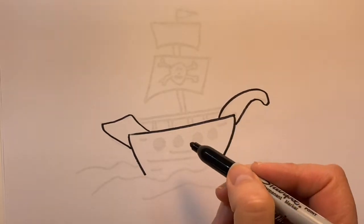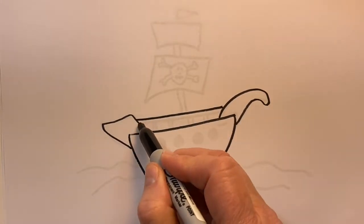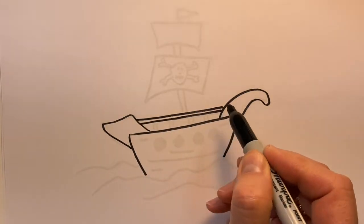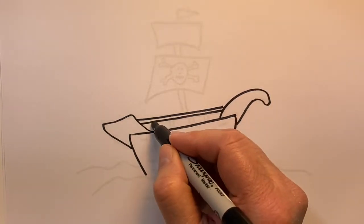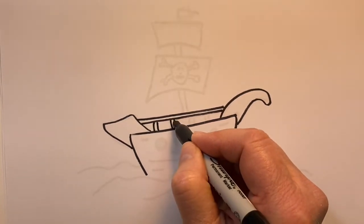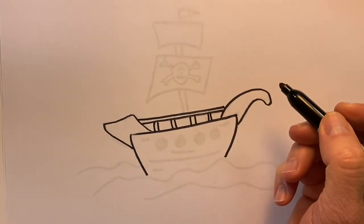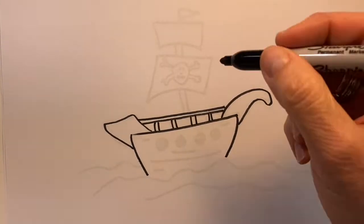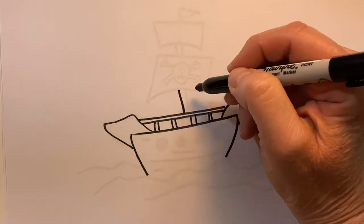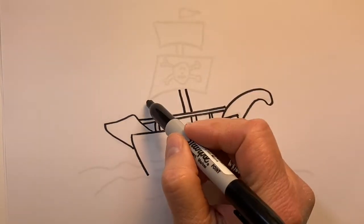Just add little details there and then a railing here. Double line that slanted line and double line these other lines. And again I'm tracing on top of one I've already drawn. Just makes it a little easier when I'm figuring out how to draw the ship.